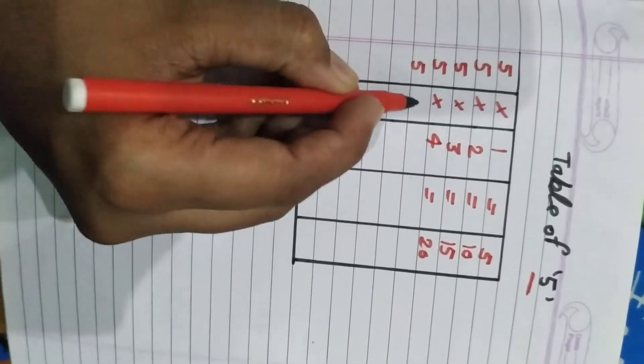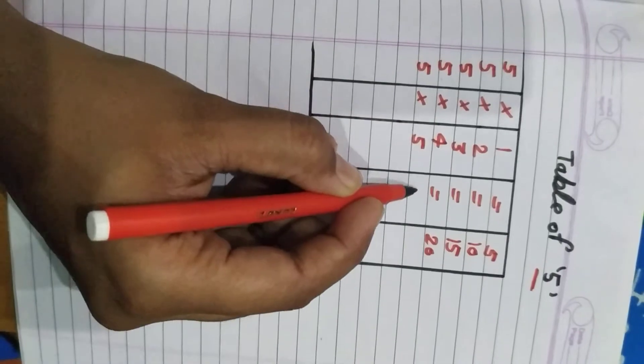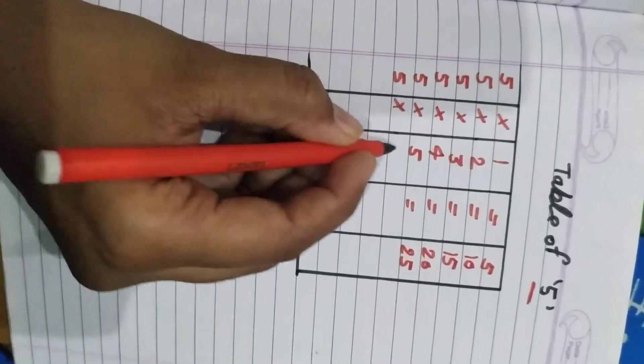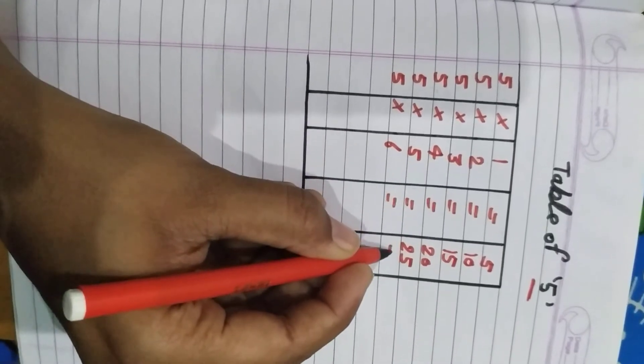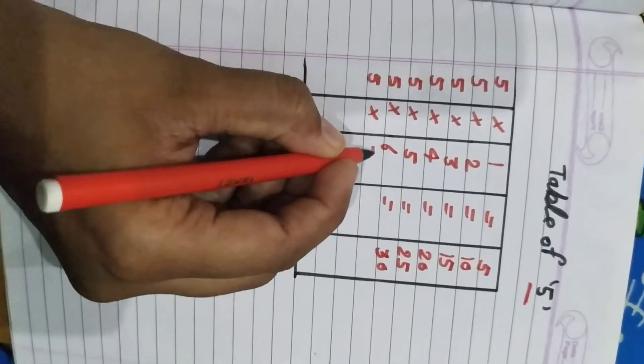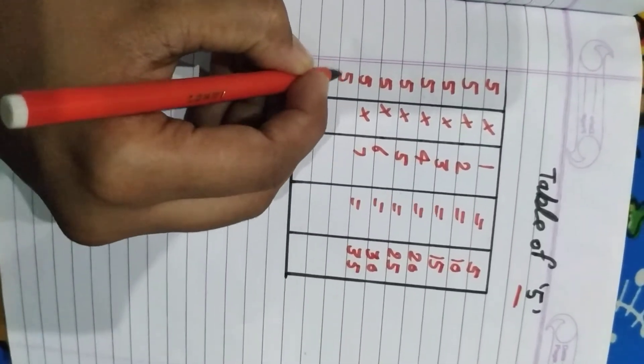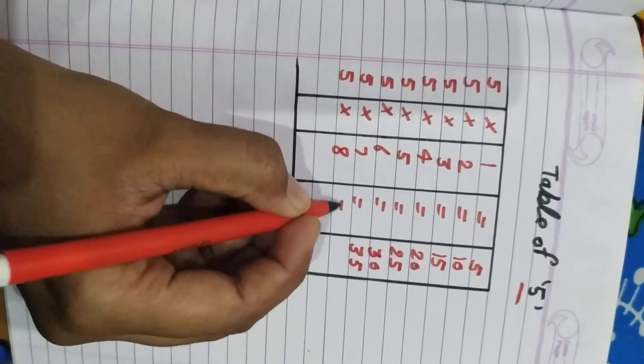Five five ja twenty five. Five six ja thirty. Five seven ja thirty five. Five eight ja forty.